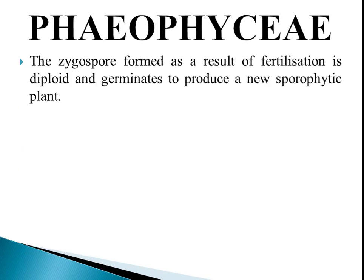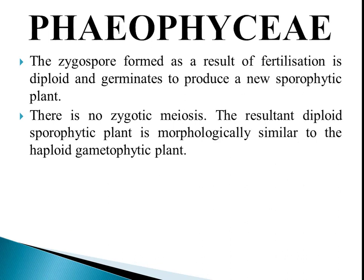The zygote formed as a result of fertilization is diploid and germinates to produce a new sporophytic plant body. There is no zygotic meiosis. The resultant diploid sporophytic plant is morphologically similar to the haploid gametophytic plant.